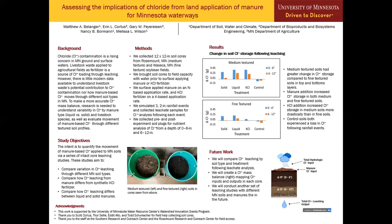In the future, we would like to get the leachate data back and see how chloride moved through the soil profile — specifically whether the chloride stored in the soil eventually flows out towards the end of the experiment. We will then compare the leaching by soil treatment following the leaching analysis. Once we have all the data, we would like to create a chloride mass balance, mapping the chloride inputs of total hydrologic chloride input and the manure chloride input against the total chloride leaching output, to calculate delta chloride storage in each layer respectively. We will also conduct another set of leaching studies with different Minnesota soils and different manures in the future.